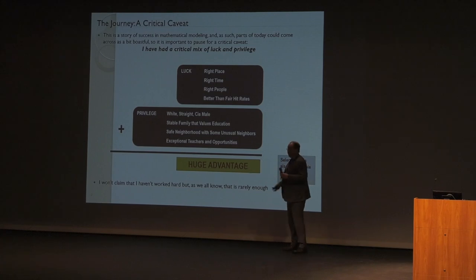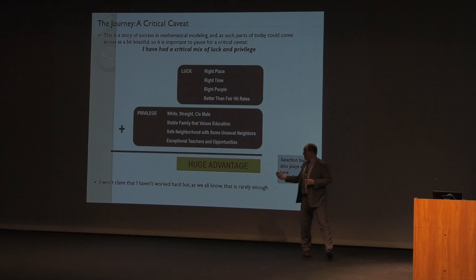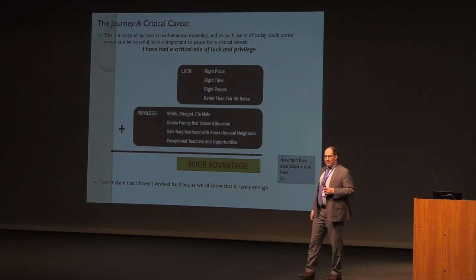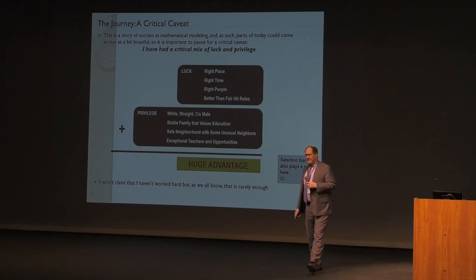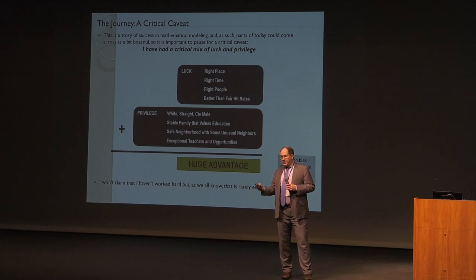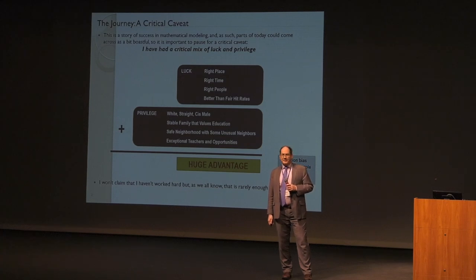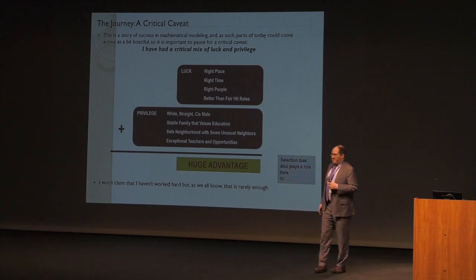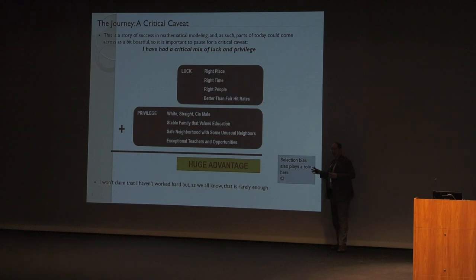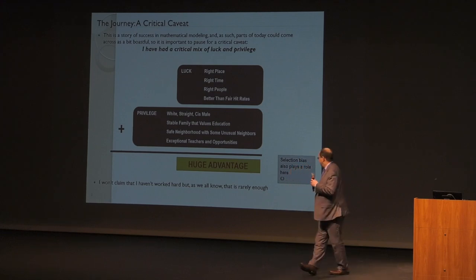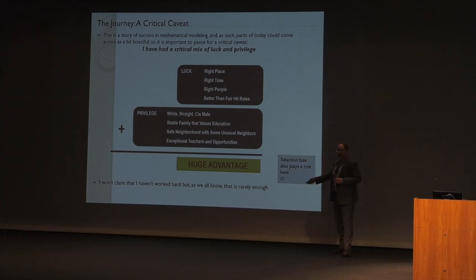I have had every privilege except money, basically. White, straight, cis male, from a stable family that valued education, from a safe neighborhood with some unusual neighbors and exceptional teachers and opportunities. The guy behind me — his dad worked on computers in the early 70s and had built his own mainframe in the basement, apparently like the third one he'd built. It meant that when I was three years old, I remember having a large Unix system to play with. All this — a huge advantage. And then we have to recognize selection bias, right? If all of this had still crumbled into failure, the odds I'd be standing here as your speaker this morning would be much lower. I won't claim I haven't worked hard, but as we all know, that's rarely enough.